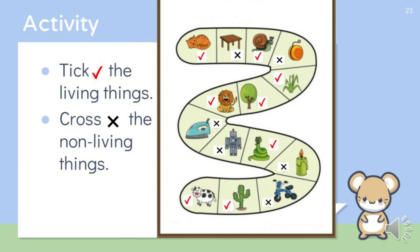First picture is of a cow. Is cow a living thing or a non-living thing? Yes, very good. Cow is a living thing, so we are going to tick it. Second picture is of a cactus plant. Plants are living things, so we are going to tick it as well.